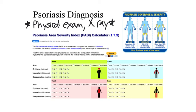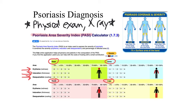Assessing a patient with psoriasis primarily involves determining symptom severity using one of two primary scales. The first is the Psoriasis Area Severity Index, or PASI calculator, which looks at the percent involvement of various body areas such as the head, arms, trunk, and legs, as well as whether erythema is present and how thick and scaly the plaques appear. Another method is the Body Surface Area, or BSA method, where mild psoriasis is less than 3% of the body, moderate is 3 to 10%, and severe is more than 10%. For reference, 1% of body surface area is approximately the surface area of the hand.